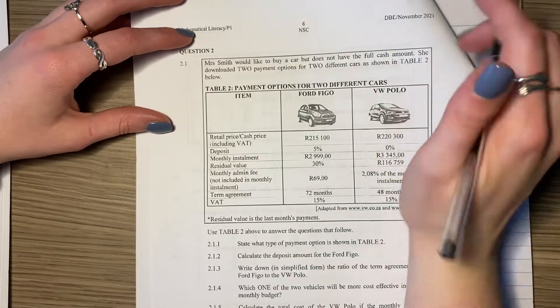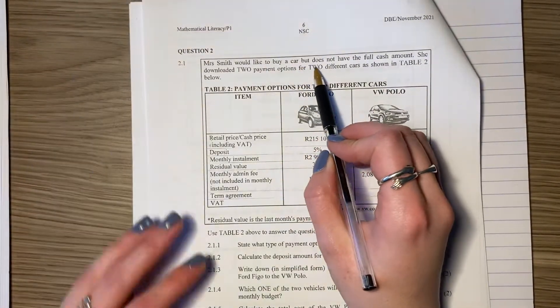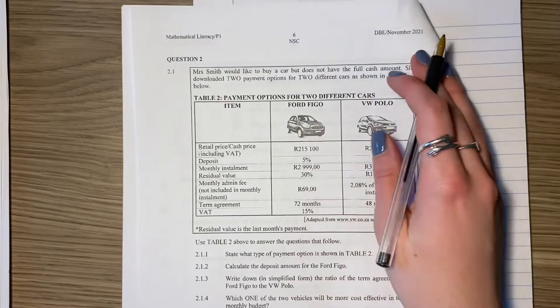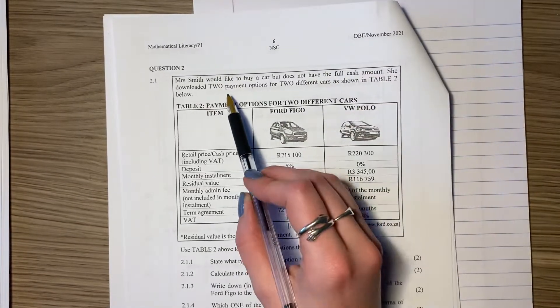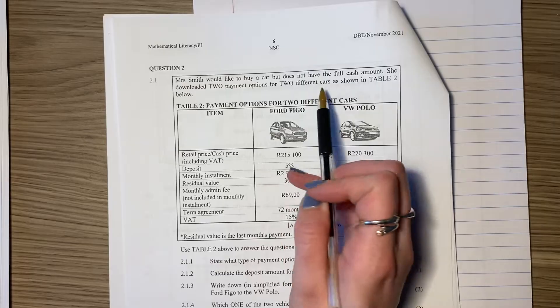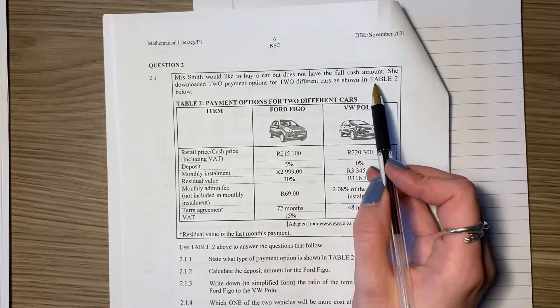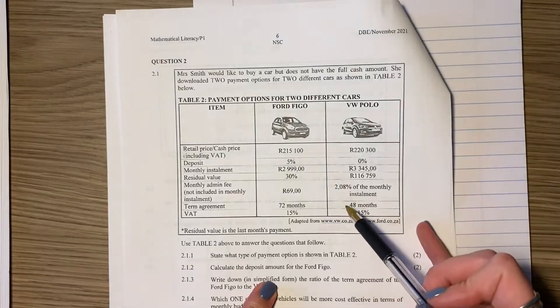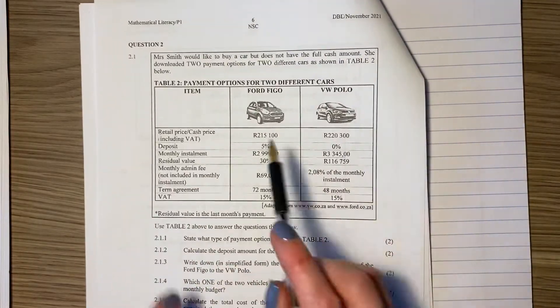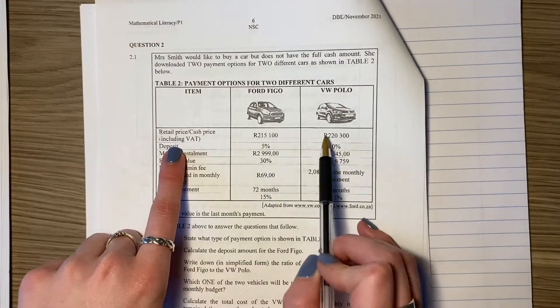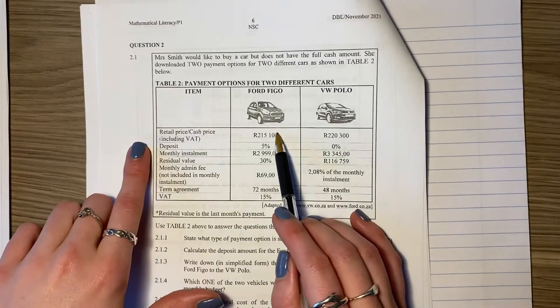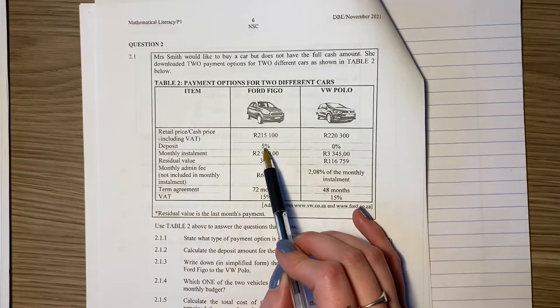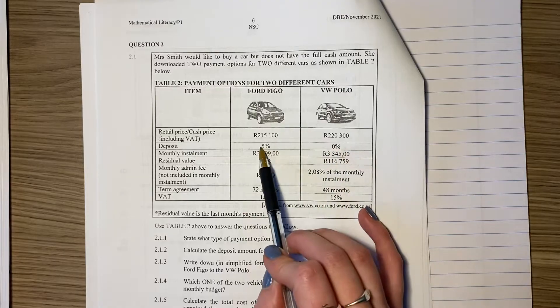Let's start question two. Mrs. Smith would like to buy a car but does not have the full cash amount, like few of us do. She downloaded two payment options for two different cars as shown in table two below. So here's the two options: there's a Ford Figo, there's a VW Polo. You'll see that initially, this is how much it would cost if she had just the cash money, but she doesn't have that. So she has this other option where you pay a deposit.